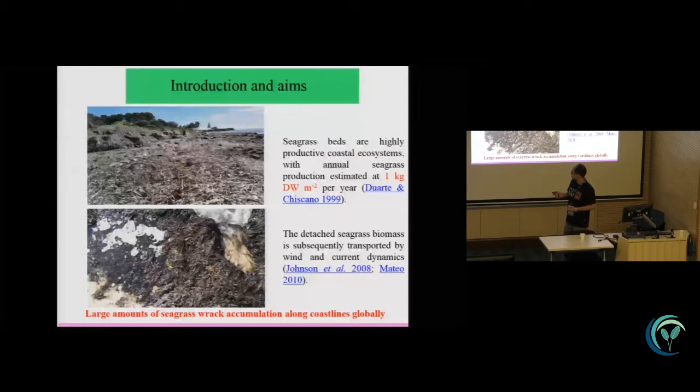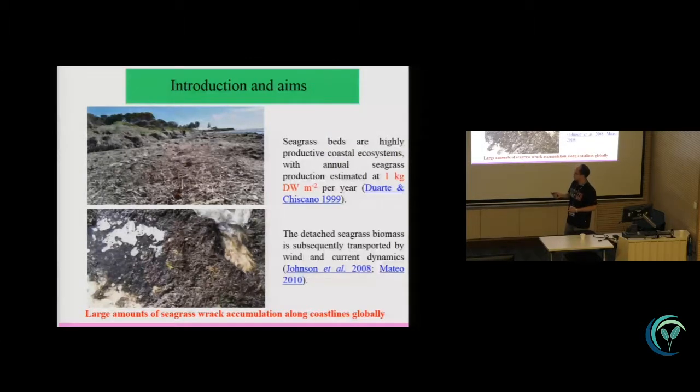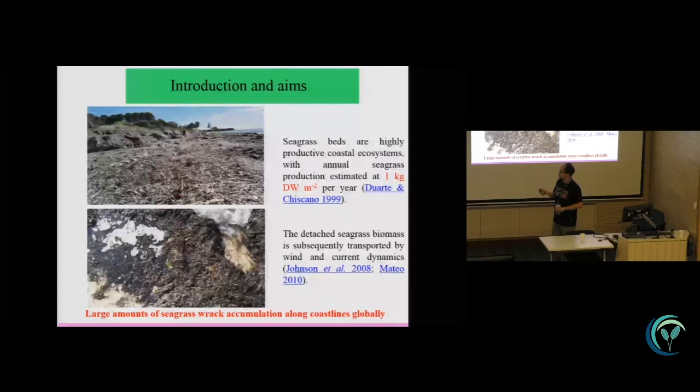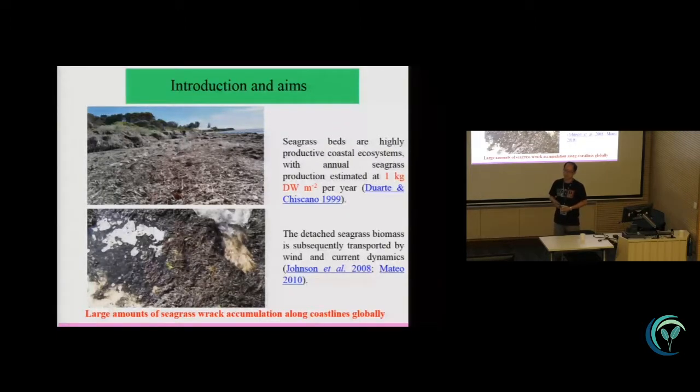So this seagrass litter has many ecosystem functions. First, they can provide food and habitat for fauna. But during the decomposition, the seagrass litter can become the source of CO2.